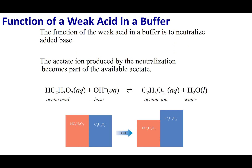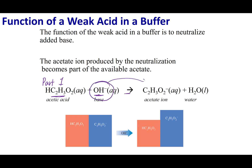How does the buffer manage this? In Part 1, the strong base interacted with the weak acid and the reaction went to completion. But what happened is we took a strong base and converted it into a weak base. A buffer takes something strong and makes it weak. You can test this with HCl: the strong acid gets consumed and becomes a weak acid. That is why a buffer resists pH change.